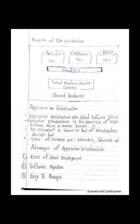In this diagram, at the bottom we have shared hardware. On top of that, we install a Virtual Machine Monitor, also called a hypervisor. Inside this hypervisor, multiple virtual machines are configured, each with different applications running on them.